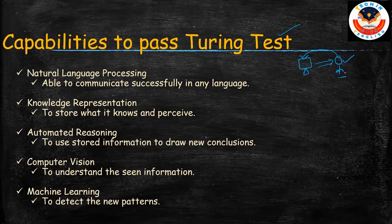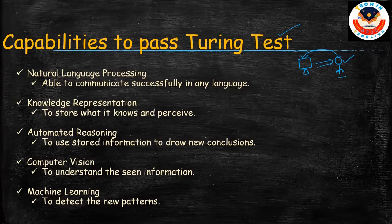If we store information and encounter new information, we use that stored knowledge to find answers. We do some kind of automated reasoning in our brain, and we draw new conclusions — even if we don't know the answer to a particular question or situation.